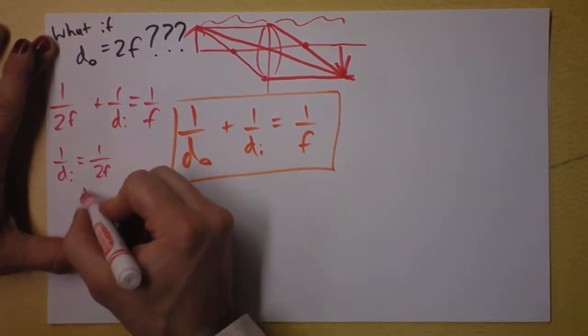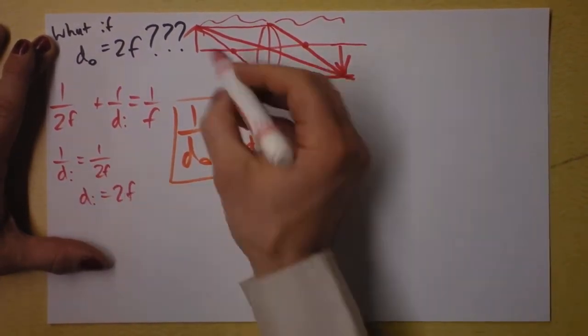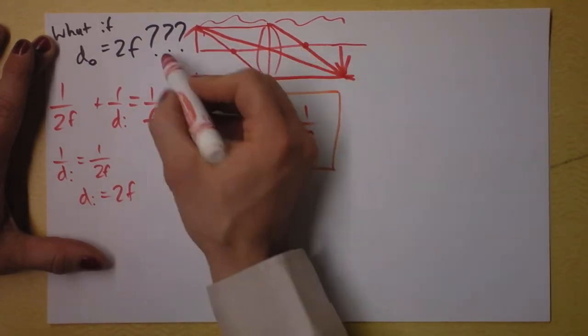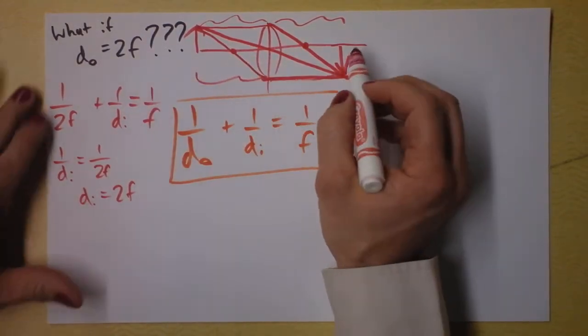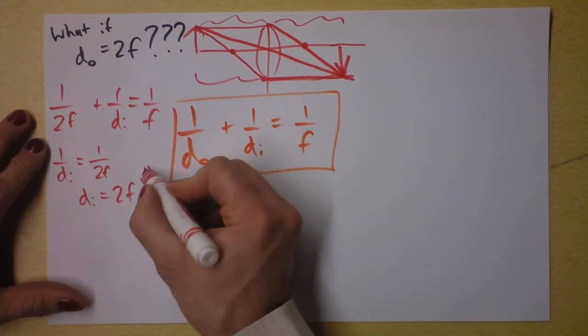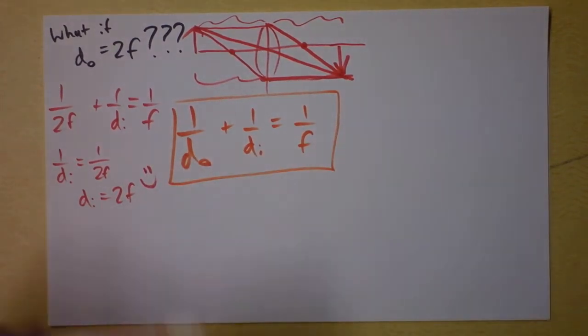Well, that's cool. That means that di is 2f, and we found that if the distance of the object is 2f, then the distance of the image is also 2f. That's nice and it confirms what we already knew. I hope I'm not wasting your time. We'll do another what if.